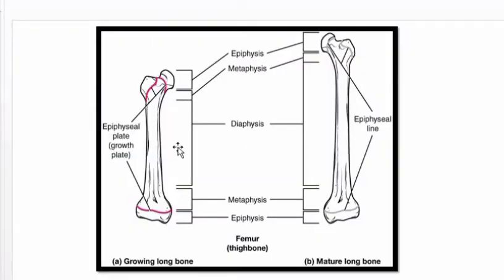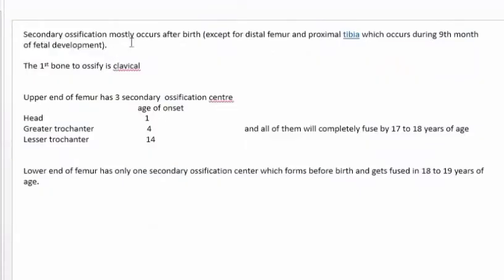Initially, while in the womb, primary ossification centers lie in the diaphysis, where bone matrix deposition begins. After birth, the role of primary ossification centers ends and secondary ossification centers take over - they start to form after birth, which is why they are called secondary. They vary in number across different bones and drive further growth and development. Secondary ossification centers mostly appear after birth, except in the distal femur and proximal tibia, where they appear at nine months of fetal development. The first bone to ossify is the clavicle.